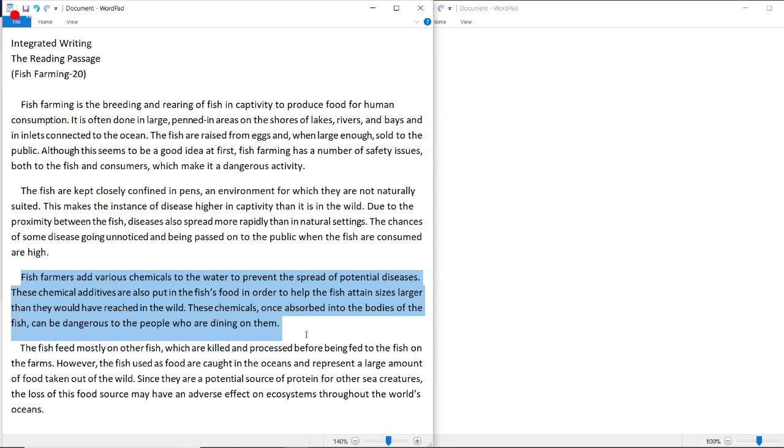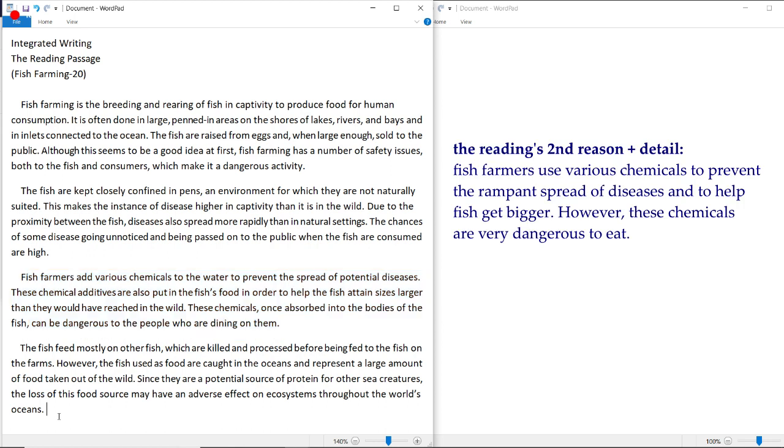These chemicals, once absorbed into the bodies of the fish, can be dangerous to the people who are dining on them. Fairly obvious. Okay, so the reading's second main point is that fish farmers try to prevent the rampant spread of potential diseases by adding various chemicals, but when all is said and done, those chemicals are harmful to the individuals who pay for and eat the fish. So that's not good.